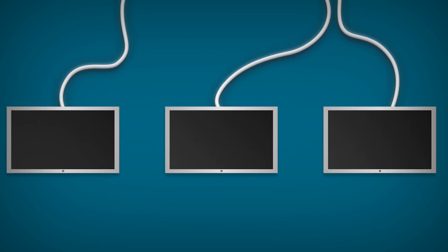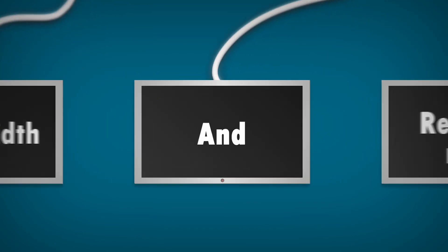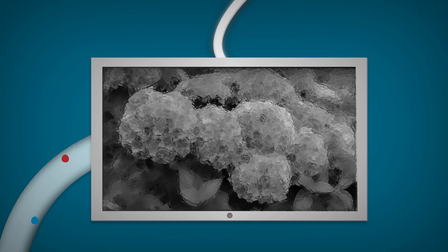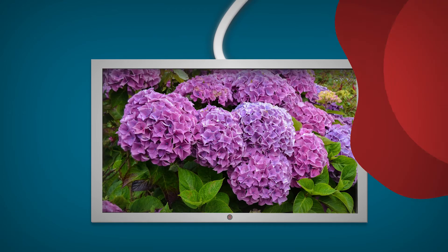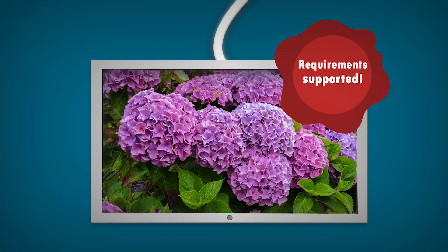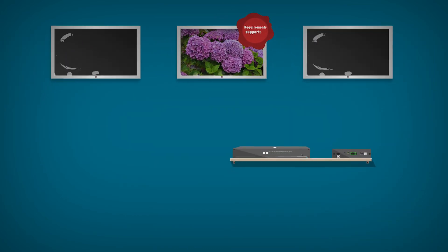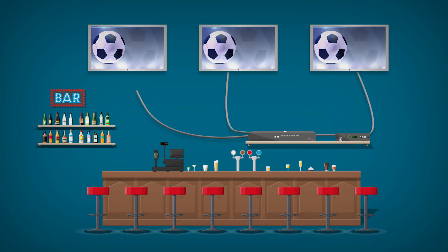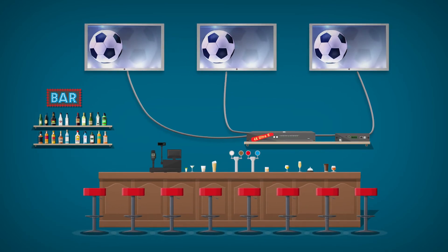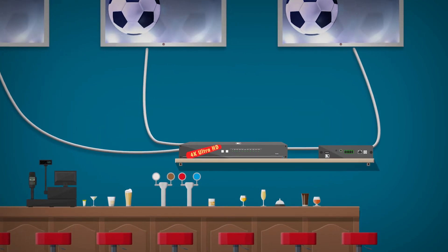Once you have identified your input and output requirements, it's time to check the bandwidth and refresh rate required to transmit the content. The higher the resolution and refresh rate, the more bandwidth required. Make sure the distribution amplifier specification supports your requirements. Also, verify the version of the High Bandwidth Digital Content Protection Standard, or HDCP, in use. Version 2.2 will be required to distribute premium 4K UHD content from UHD Blu-ray players, set-top boxes, and streaming decoders.